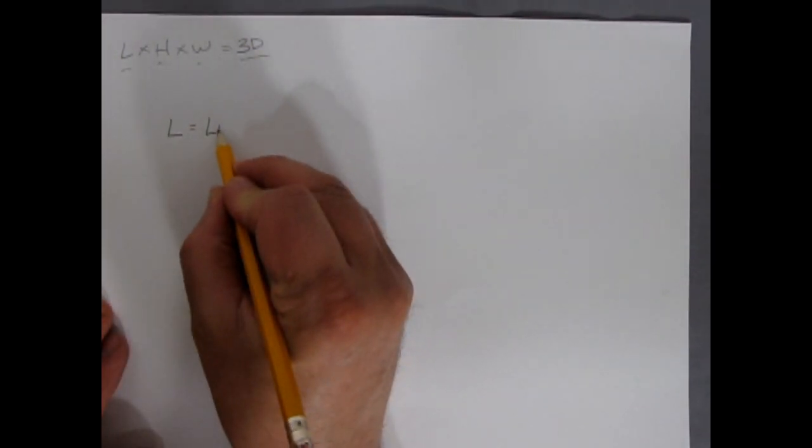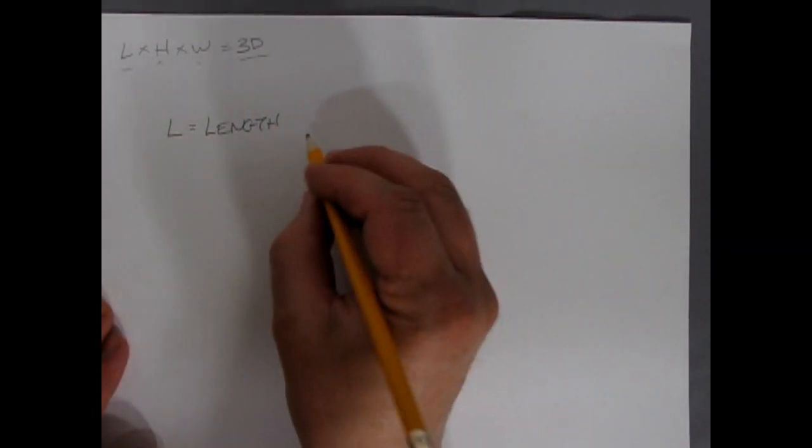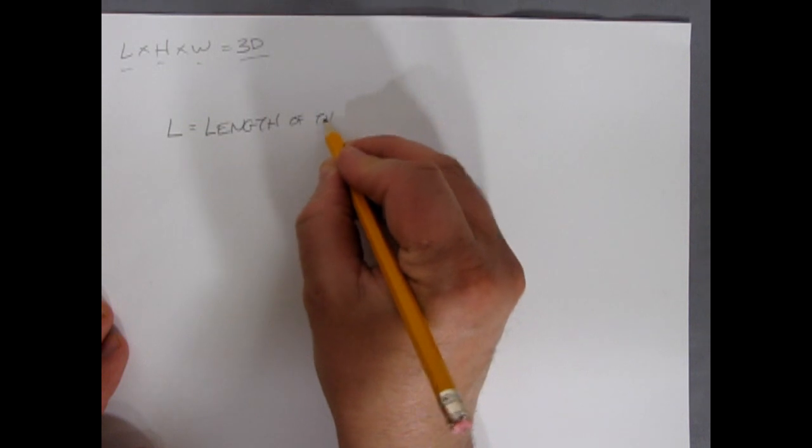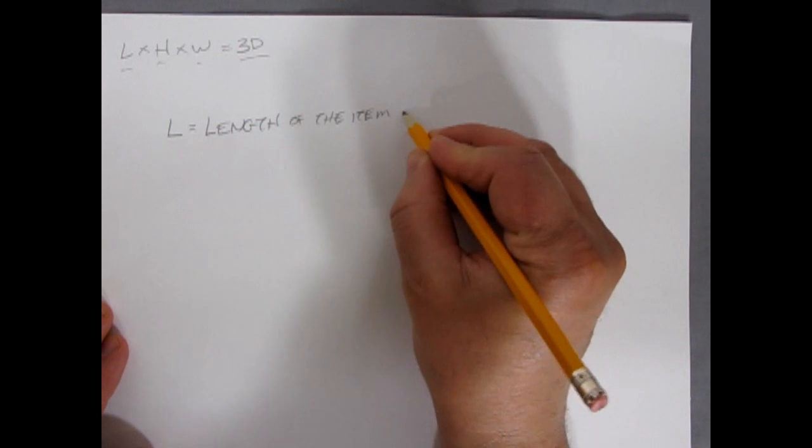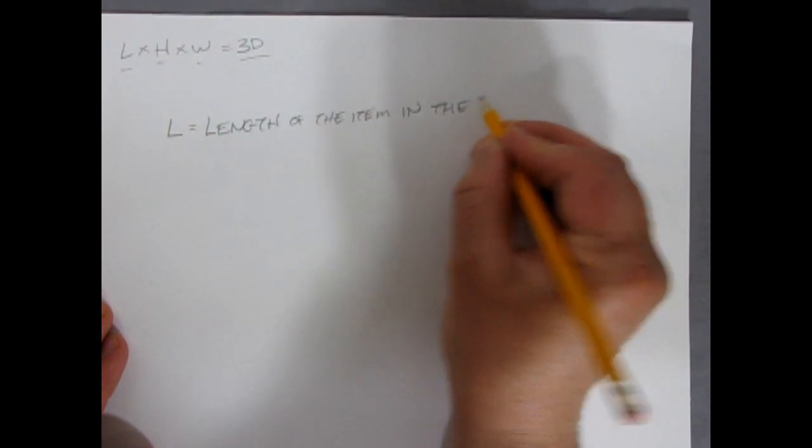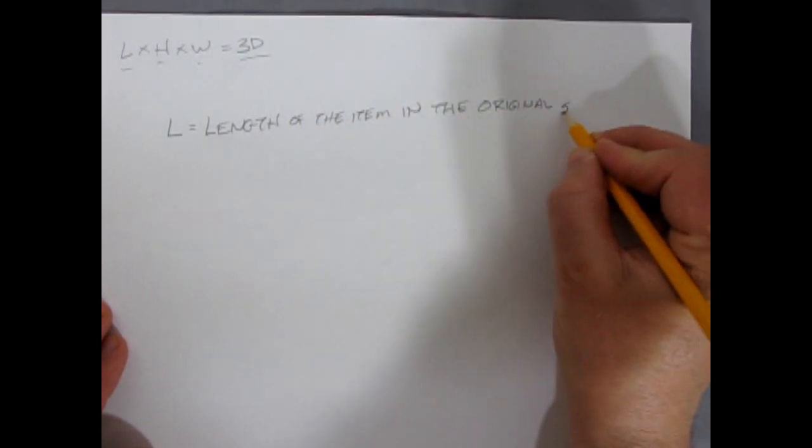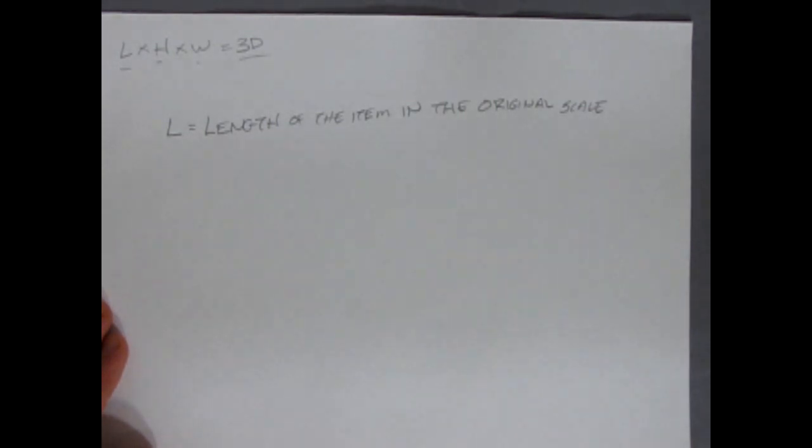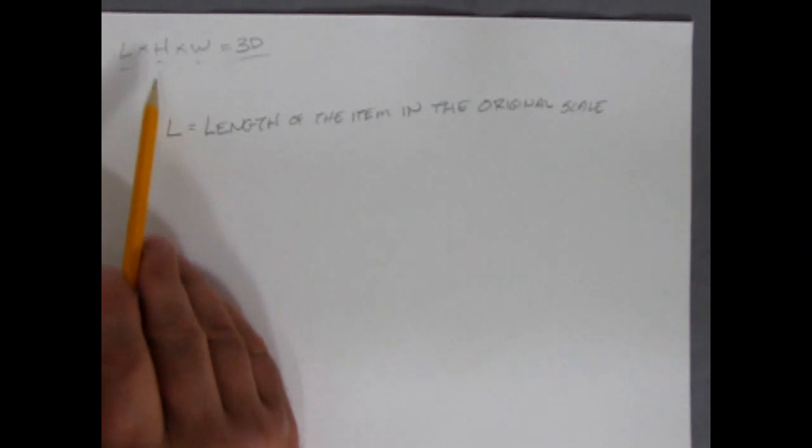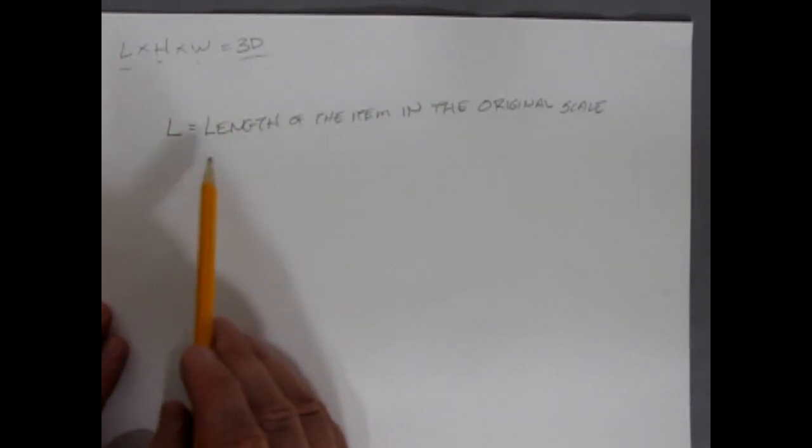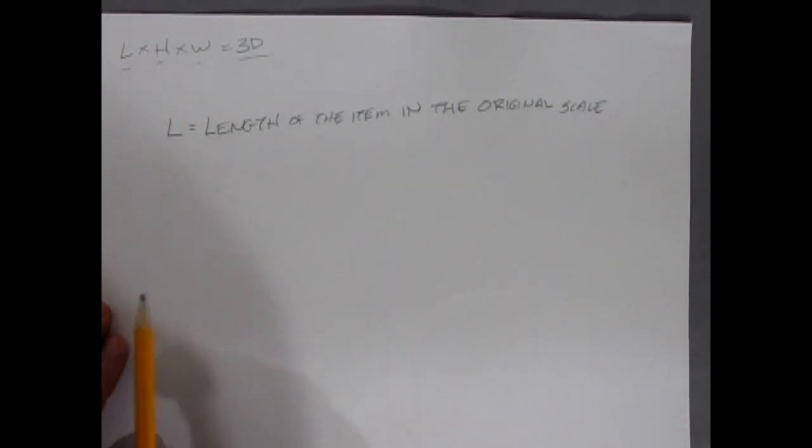So L is equal to length. So length of what? Of the item in the original scale. So our length is the length of the item in the original scale. So our height would also be the height of the item in the original scale and the width would be the width of the item in the original scale. So with those three you'll be able to scale this up.